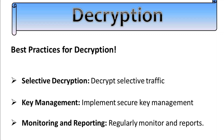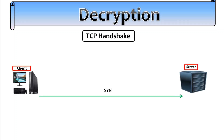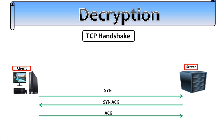Moving on, let's understand the TCP handshake. Before explaining how decryption works, let's first understand the major factors like TCP and SSL handshakes. When traffic starts, they first form a TCP handshake. During the TCP handshake, the client sends a SYN packet to the server, the server replies with a SYN-ACK, and finally the client acknowledges and the TCP connection is established.